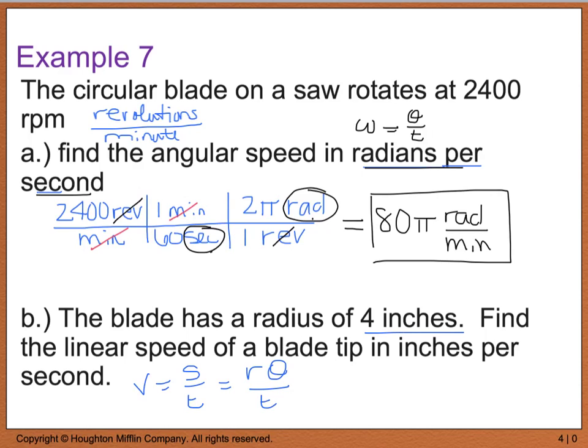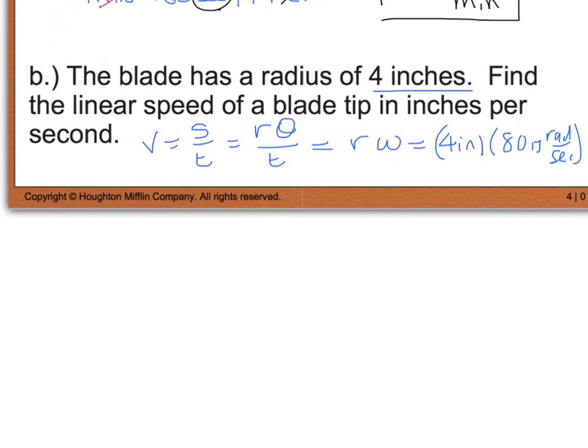And R theta divided by t, theta divided by t was really omega, or our angular speed. So, I can really use that V equals R times omega. So, my radius is 4 inches times my omega, which I just found in part A. And that was 80 pi radians per second. And when we simplify this, we end up with 4 times 80 pi is going to give me somewhere around 1,005 inches per second. And that would be my linear speed.